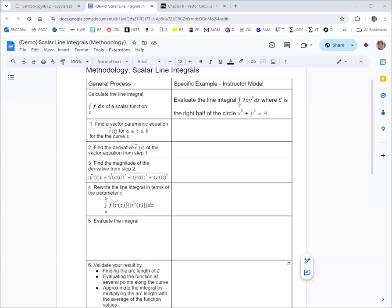In this video, we're going to see how to calculate a scalar line integral. So we have some scalar function of several variables, and we are integrating along some curve. The specific example we're looking at is the integral of the function 7xy to the fourth, and the curve we are integrating on is the right half of the circle x squared plus y squared equals 4.